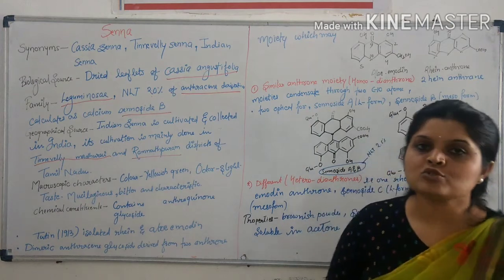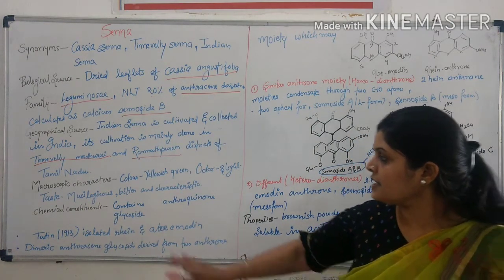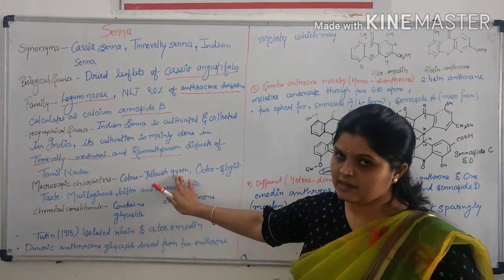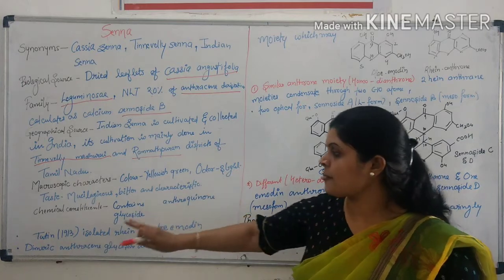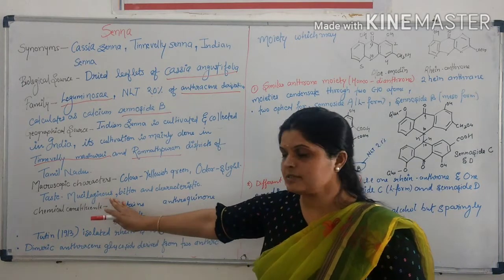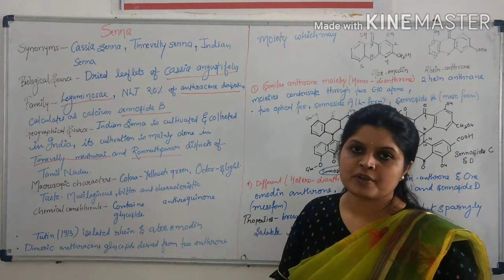Then, microscopic character of Senna: greenish yellowish-green in color. It is slightly in odor. It is useless, bitter and astringent in taste.